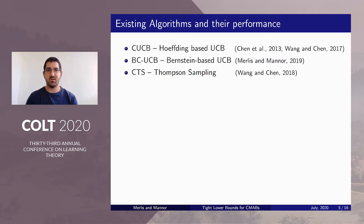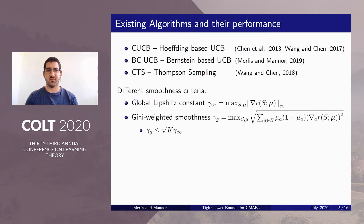From the UCB side, there's CUCB that uses Hoeffding-based confidence intervals, and there's BCUCB that we presented last year at COLT, which uses Bernstein-based confidence intervals. From the Thompson sampling side, there's CTS. Both algorithms depend on one of two smoothness criteria. UCB and CTS depend in performance on the global Lipschitz constant of the reward function, and BCUCB depends on the Gini-weighted smoothness, which we will explain more thoroughly in the next slides.